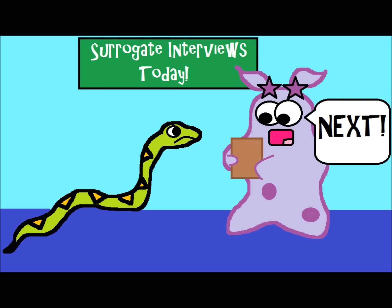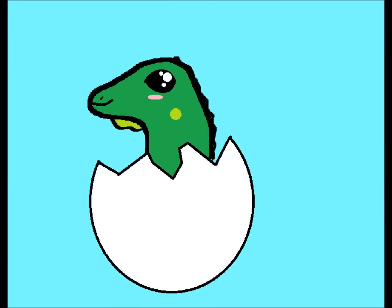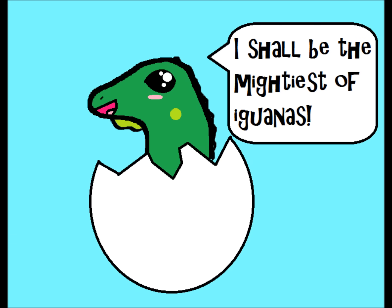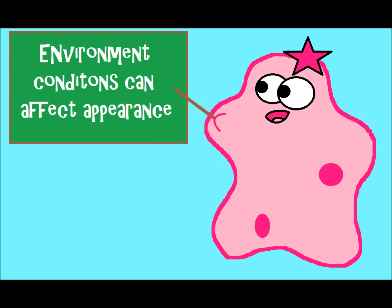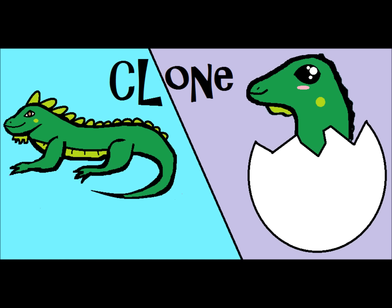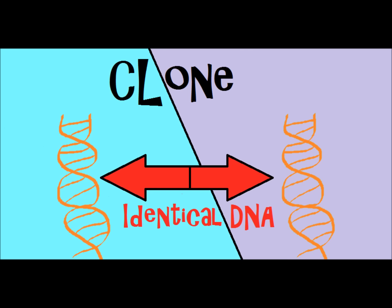Keep in mind that it would still hatch into a baby iguana, but over time that iguana would develop, and there'd be some environmental conditions that might make it look slightly different than the original — because the environment can affect how the organism looks and how genes function. But the iguana would be a clone, an identical copy, because the genetic material — that DNA — would be the same.